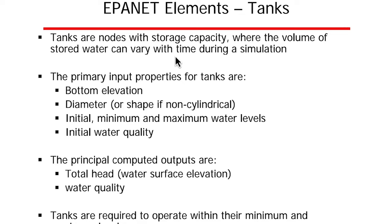Tanks are nodes with storage capacity where the volume of stored water can vary with time during the simulation. Water can go out and potentially come back in through a tank. The main properties required during simulation for a tank are: bottom elevation, diameter, initial water level, minimum and maximum water levels, and initial water quality. The principal computed outputs for tanks are total head, which is the water surface elevation, and water quality. Tanks are required to operate within their minimum and maximum levels.